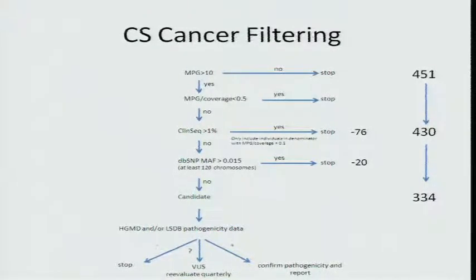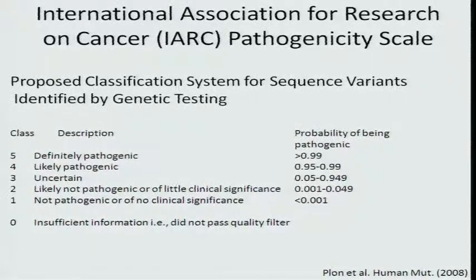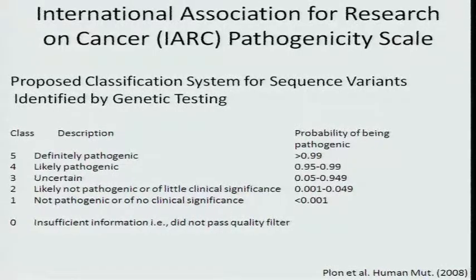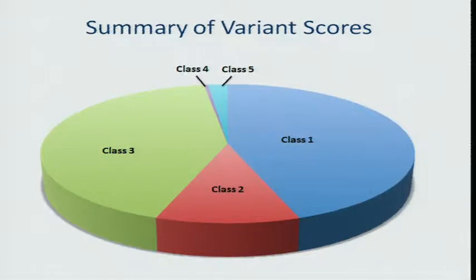We take these data and port them through a group process of pulling down all of this data and looking at it manually, as a model for what we want to do going forward to build semi-automated approaches. We then try to categorize variants, at least for the cancer study, based on a pathogenicity scale proposed by the International Association of Research on Cancer. We use this in a semi-quantitative way to recognize that there is a large bell-shaped distribution of causal probabilities, where most variants are in a broad middle segment of uncertain pathogenicity, with a smaller number being certainly benign and a small number being highly likely to be pathogenic.